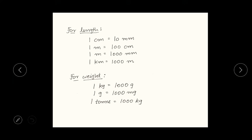And for weight, they have given 1 kilogram is equal to 1000 gram, 1 gram is equal to 1000 milligram, and 1 ton is equal to 1000 kilogram.